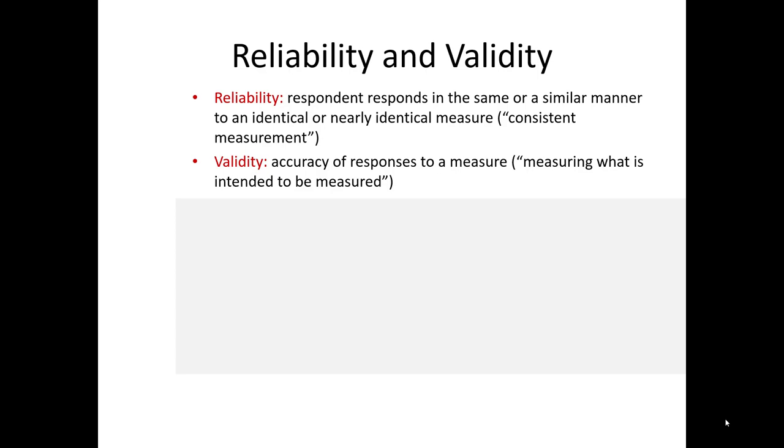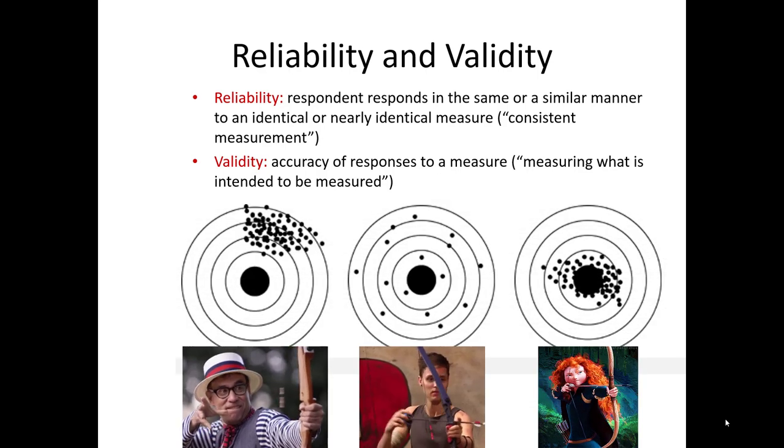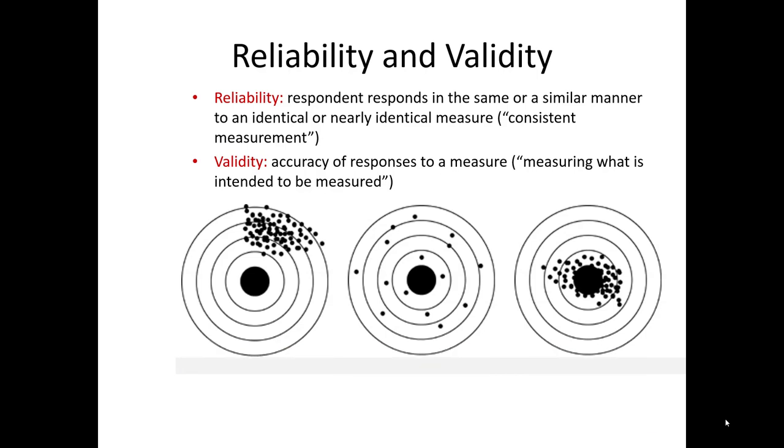Oftentimes when it comes time to illustrate reliability and validity, it's done by way of a target. Look at these three targets below. Let's imagine that our objective is to hit the bullseye. Which one of these represents valid but not reliable? That would be the one in the middle.